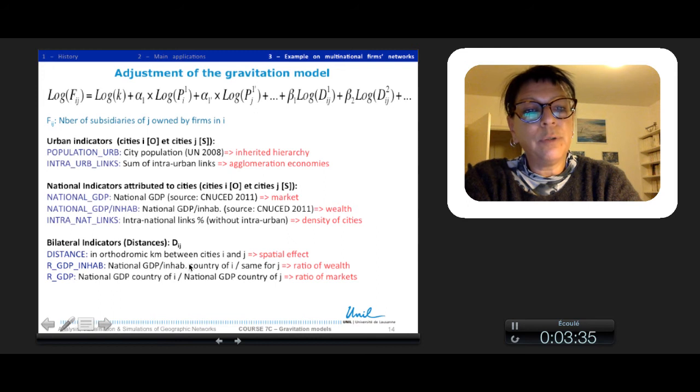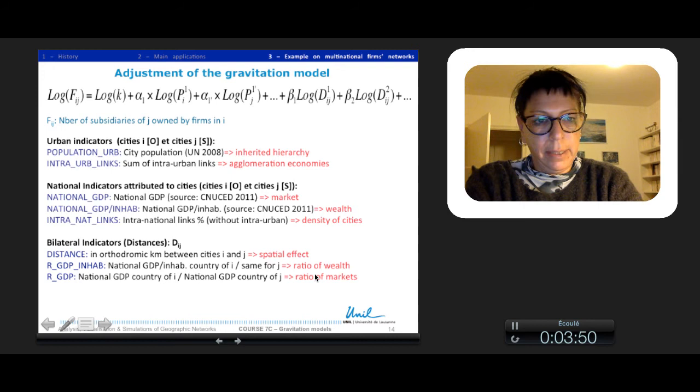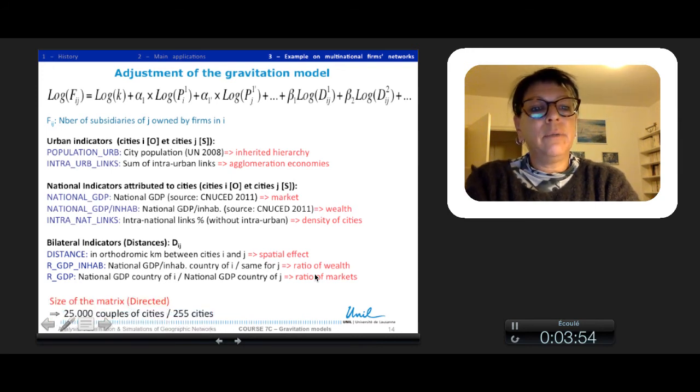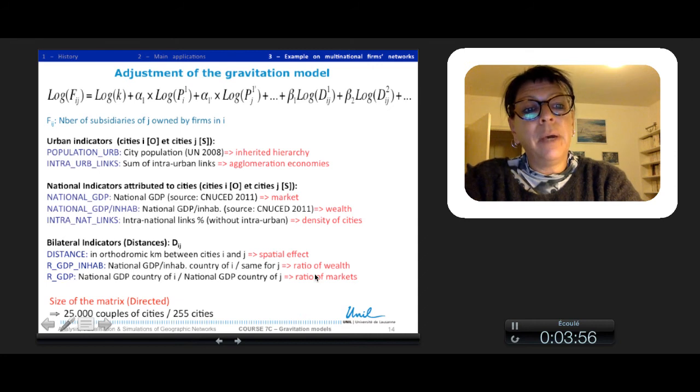And then I used also some bilateral indicators for the distance: the distance itself in orthodromic kilometers, so the spatial effect; the national GDP per inhabitant ratio from country I to country J, the ratio of wealth; and the ratio of GDP, which is the ratio between country I and J, the ratio of market. The size of the matrix is about 25,000 couples of cities, 155 cities directed.